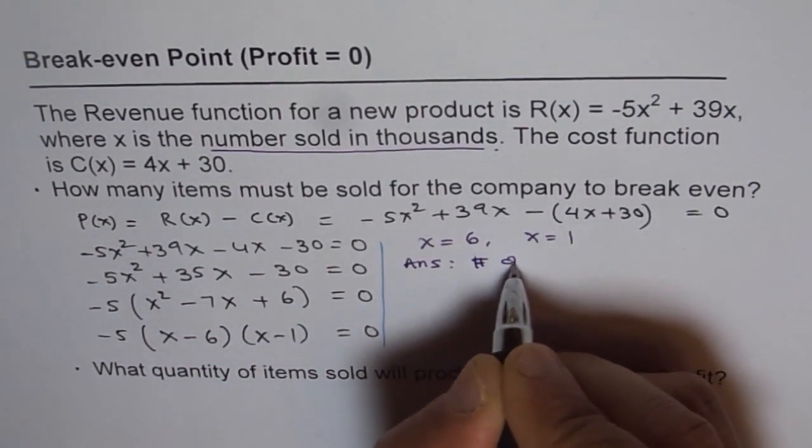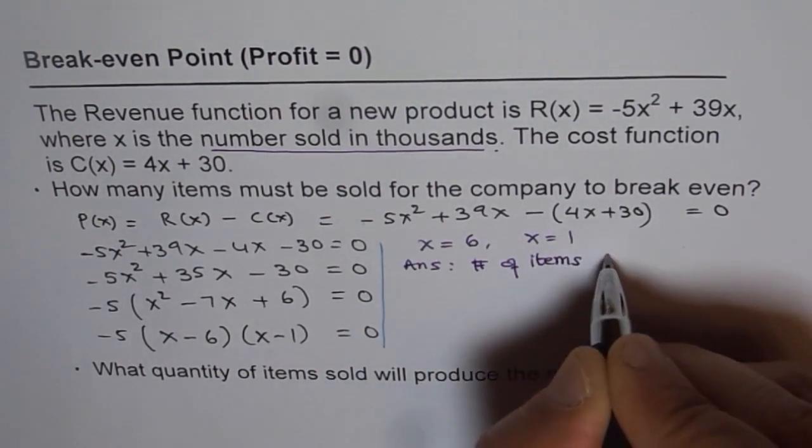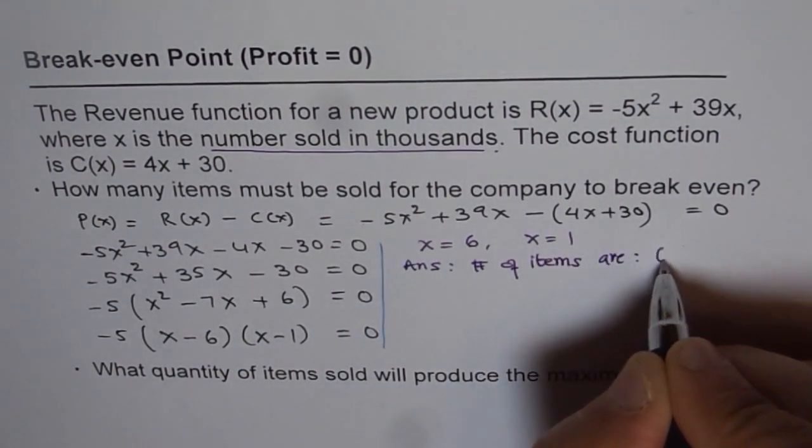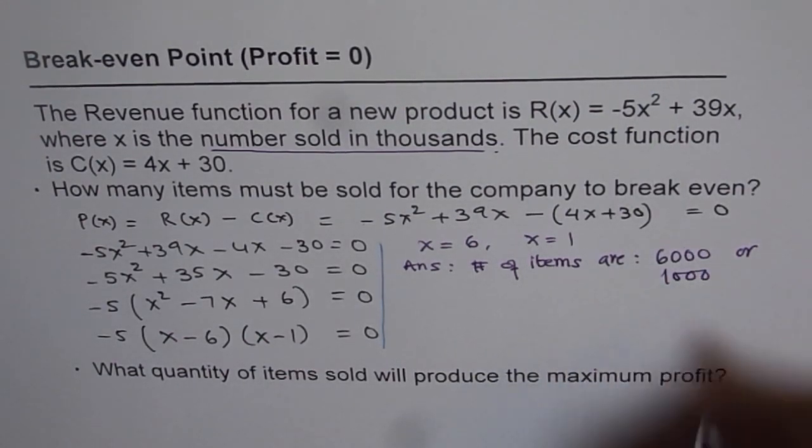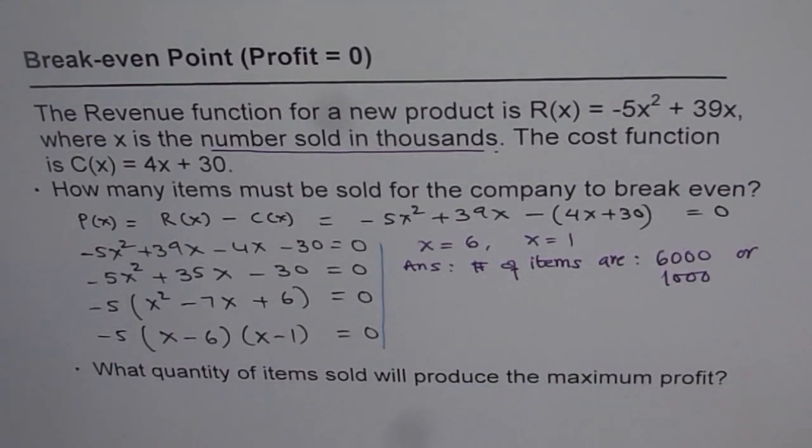Number of items are either 6,000 or 1,000. At both points, you get a break-even point. That is what the answer is.